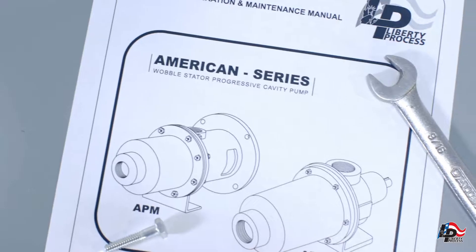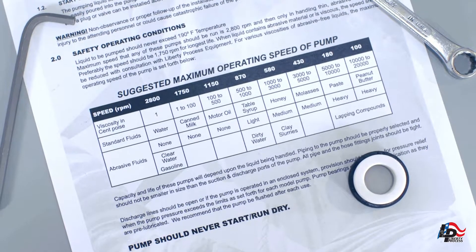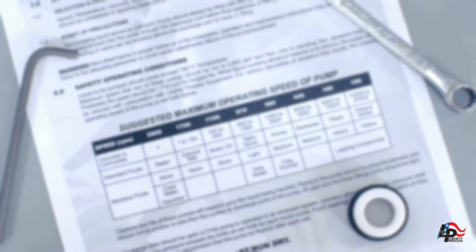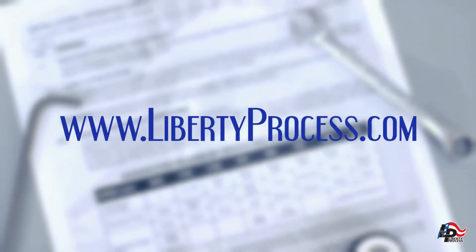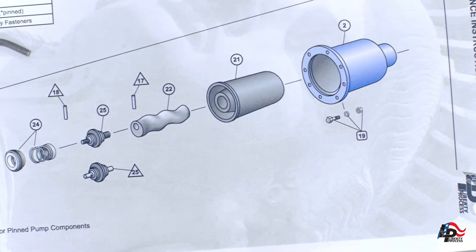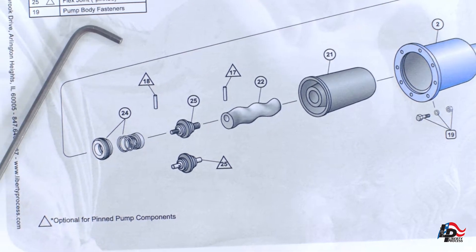While repairing, disassembling, or installing the pump, we recommend using the Operations, Maintenance, and Installations Manual for the Liberty AP and APM series pumps and reviewing them before starting any repairs. These are available for view or downloadable at www.LibertyProcess.com. These manuals contain the full information on how to properly assemble and disassemble and how to safely operate your Liberty Progressive Cavity APM series wobble stator pump.